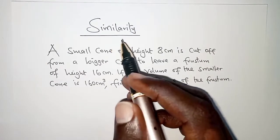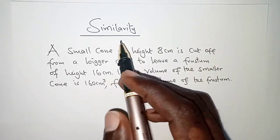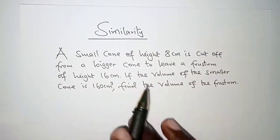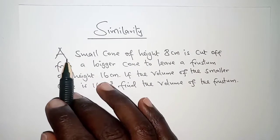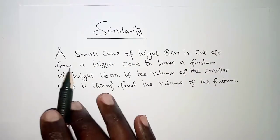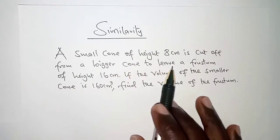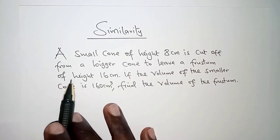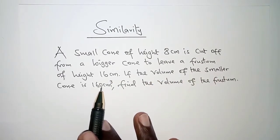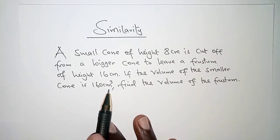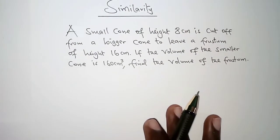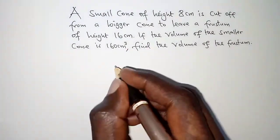Welcome to today's presentation. We are going to look at similarity. The equation we have reads: a small cone of height 8 centimeters is cut off from a bigger cone to leave a frustum of height 16 centimeters. If the volume of the smaller cone is 160 cubic centimeters, find the volume of the frustum.